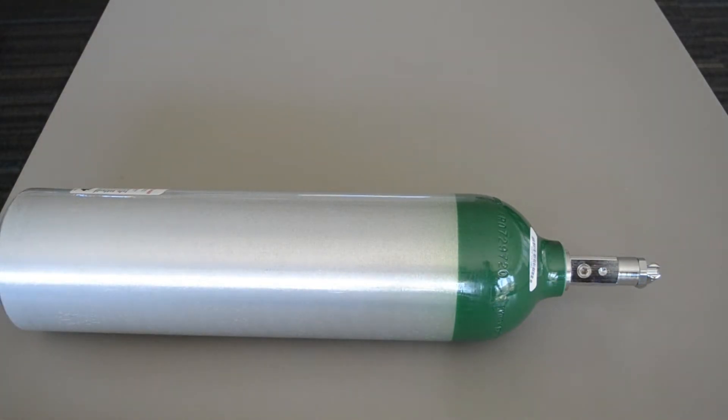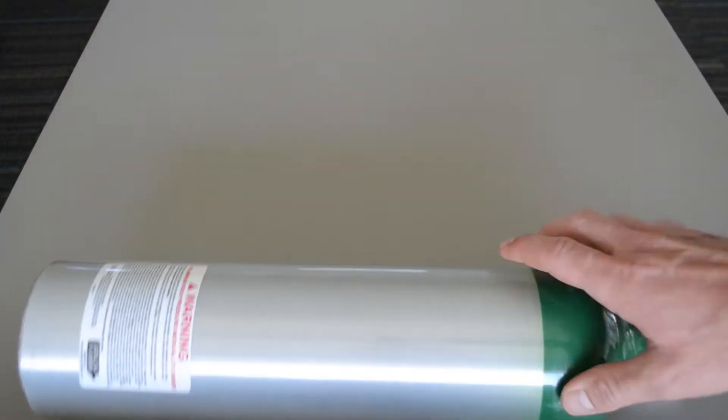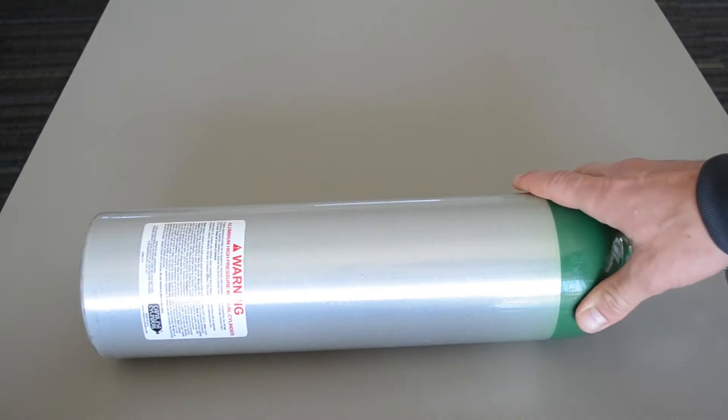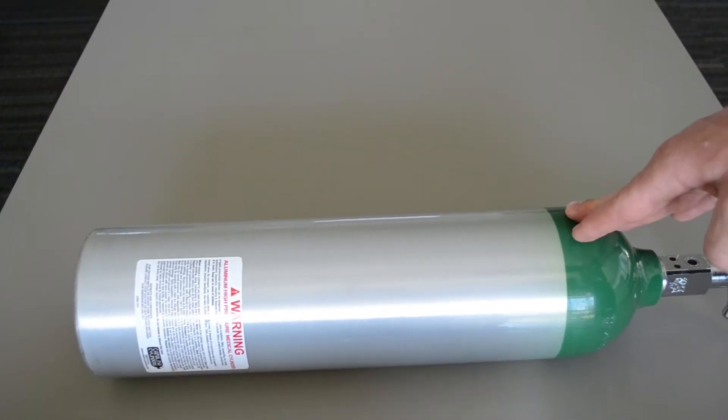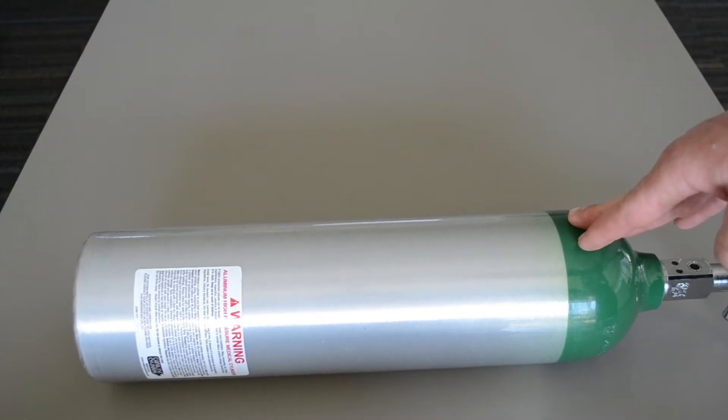All right, so this is your standard O2 cylinder you're going to see out in the field. This is a D-Tank that denotes the size, there's several different sizes. This is something you will take portably with you on scene.